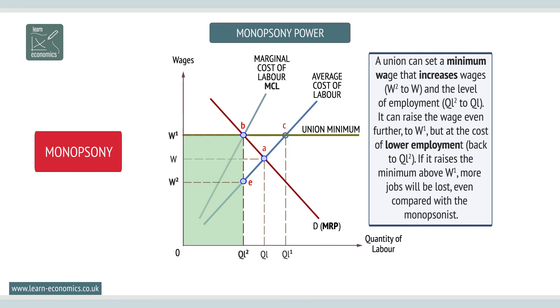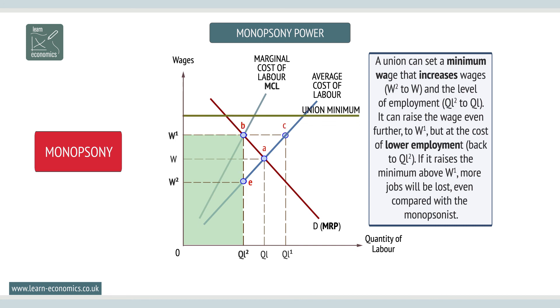If it raises the minimum above W1, more jobs will be lost, even compared with a monopsonist.